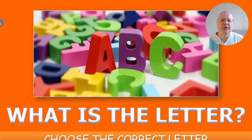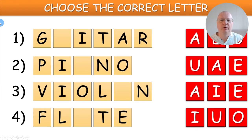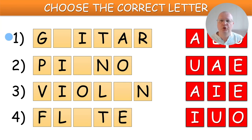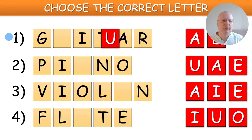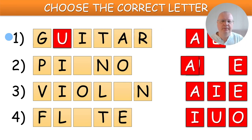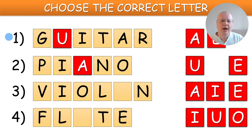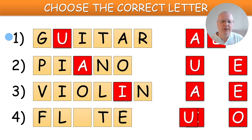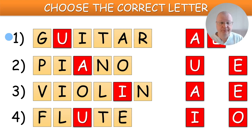Next: What is the letter? A very simple spelling exercise — students need to choose the correct letter. In this case: A for guitar, A for piano, I for violin, and U for the flute.